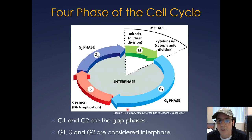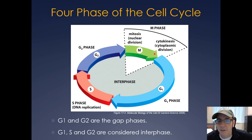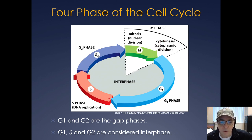Those phases are actually interspersed with what are called gap phases — G1 and G2. So technically the cell cycle exists in four phases: mitosis (nuclear division) and cytokinesis (cytoplasmic division), G1 (a gap phase), S phase (where it's replicating all of its DNA, the synthesis phase), and then another gap phase, G2, before it enters mitosis.